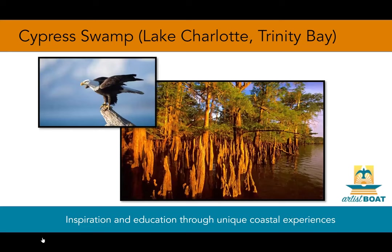We'll start off with Cypress Swamp. This is a forested wetland that includes woodlands or forested areas with saturated soils inundated by water much of the year. In the Galveston Bay system, this community is located almost exclusively in the Trinity River Valley. The swamp community primarily consists of bald cypress with some cottonwood, water elm, and water hickory.